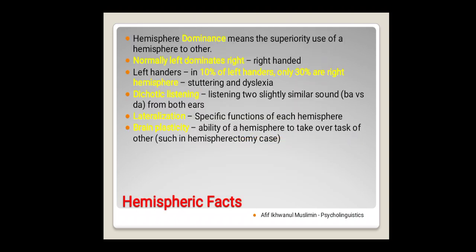And the next one, there is also what is called brain plasticity. Brain plasticity is about the ability of a hemisphere to take over the task of other, because of maybe an accident or maybe there's a lesion or defect in one of the hemisphere. So the doctor removes one of the hemispheres, for example, in hemispherectomy cases.